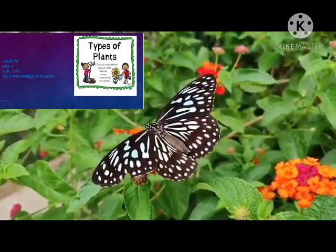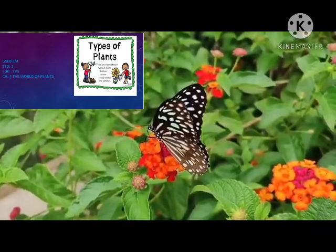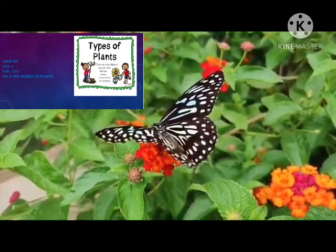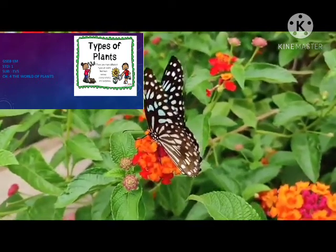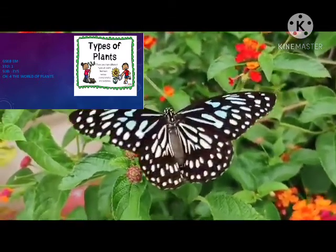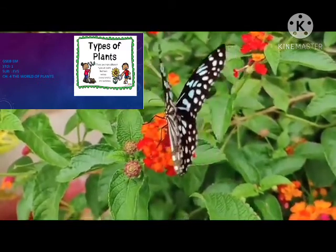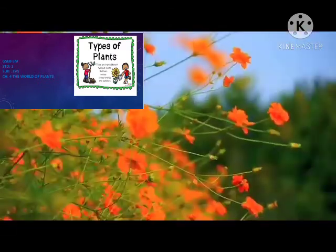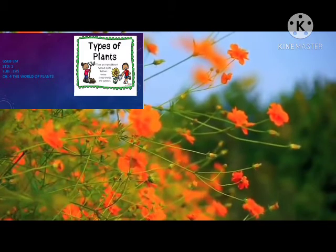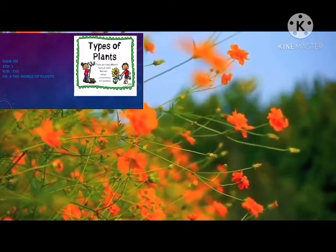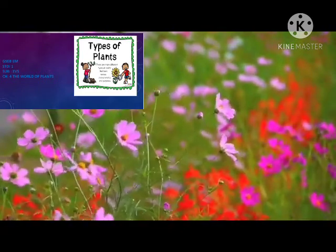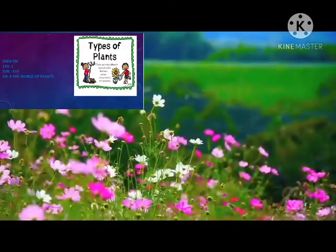Hello kids, welcome back to our e-learning class. In subject EVS, we have almost completed chapter number four: The World of Plants. In this chapter, we covered different types of plants. Plants are of different shapes and sizes — some plants grow big, some remain small. Big plants are called trees; trees are tall and strong. Some plants are weak and cannot stand on their own — they need support. Such plants are called climbers.